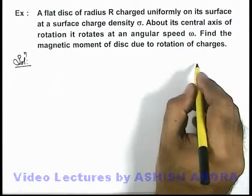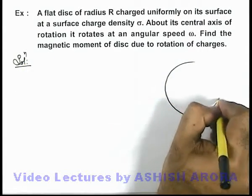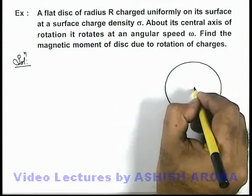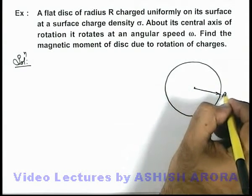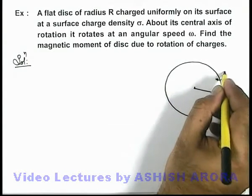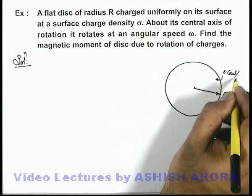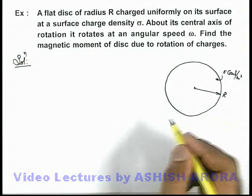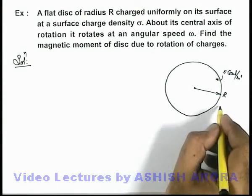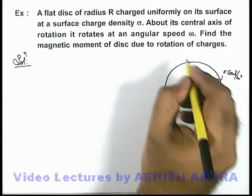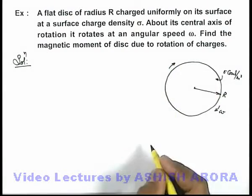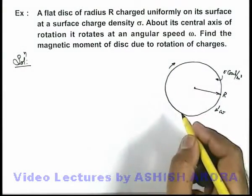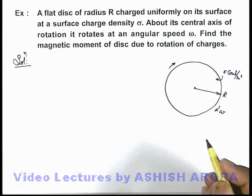Now in this situation, say if we are given a disc which is of radius R, it is charged on the surface at sigma coulomb per meter square surface charge density, and if the disc is rotating or spinning at an angular speed omega, then due to rotation of all these charges we are required to find its magnetic moment.